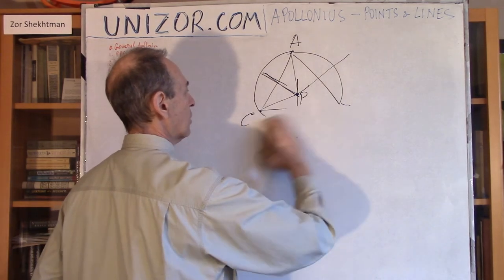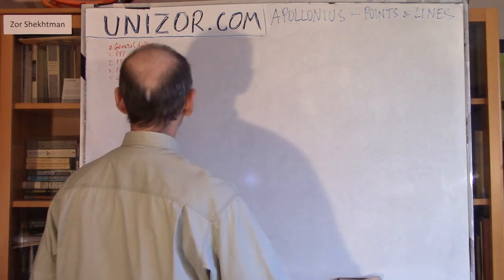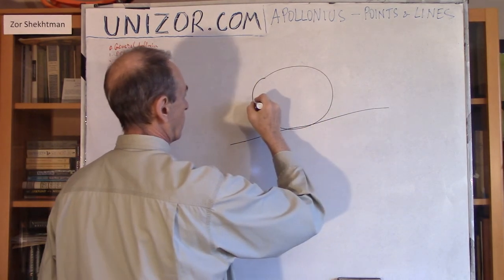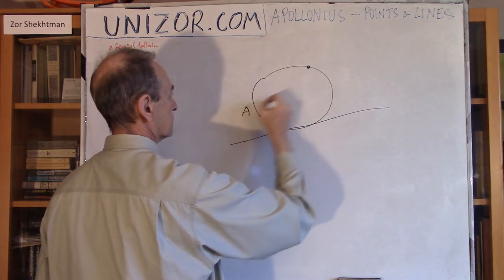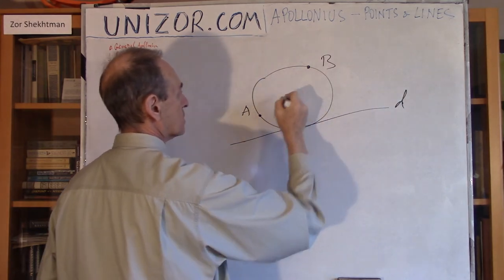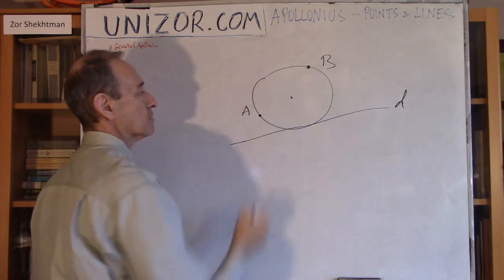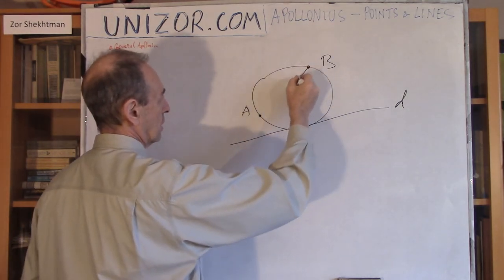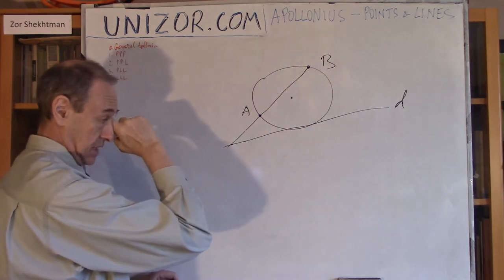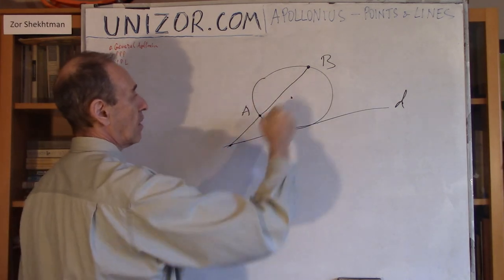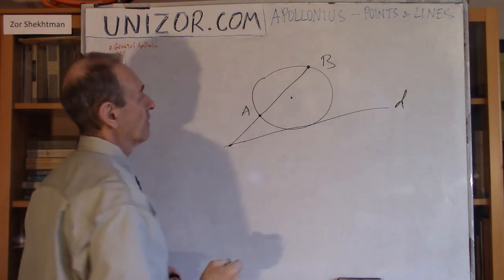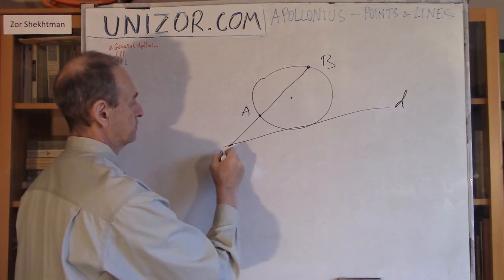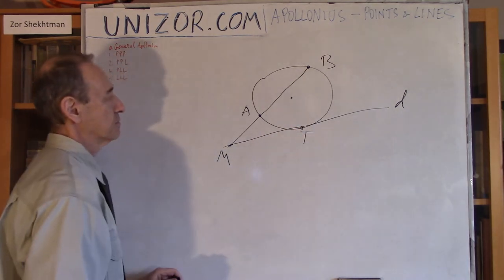The second problem is a little more complex: we have two points and a line. We have to construct a circle which is tangential to the line and passes through the two given points. The way to do this is as follows. Connect A and B; if AB extended intersects the line, let's call that intersection point M. Let T be the point of tangency on the line.